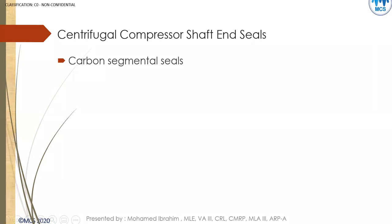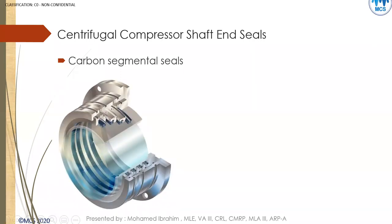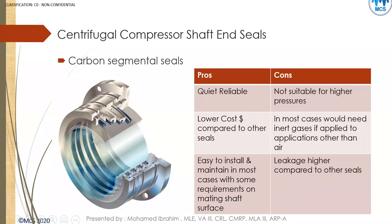The next type is carbon segment seals — carbon rings used instead of labyrinth teeth. This is the second generation of seals. The advantages are quite reliable, lower cost compared to others, and easy to install and maintain. Regarding disadvantages, it is not suitable for high pressure, needs buffer gas to be applied in most cases, and leakage will be higher than the dry gas seal.